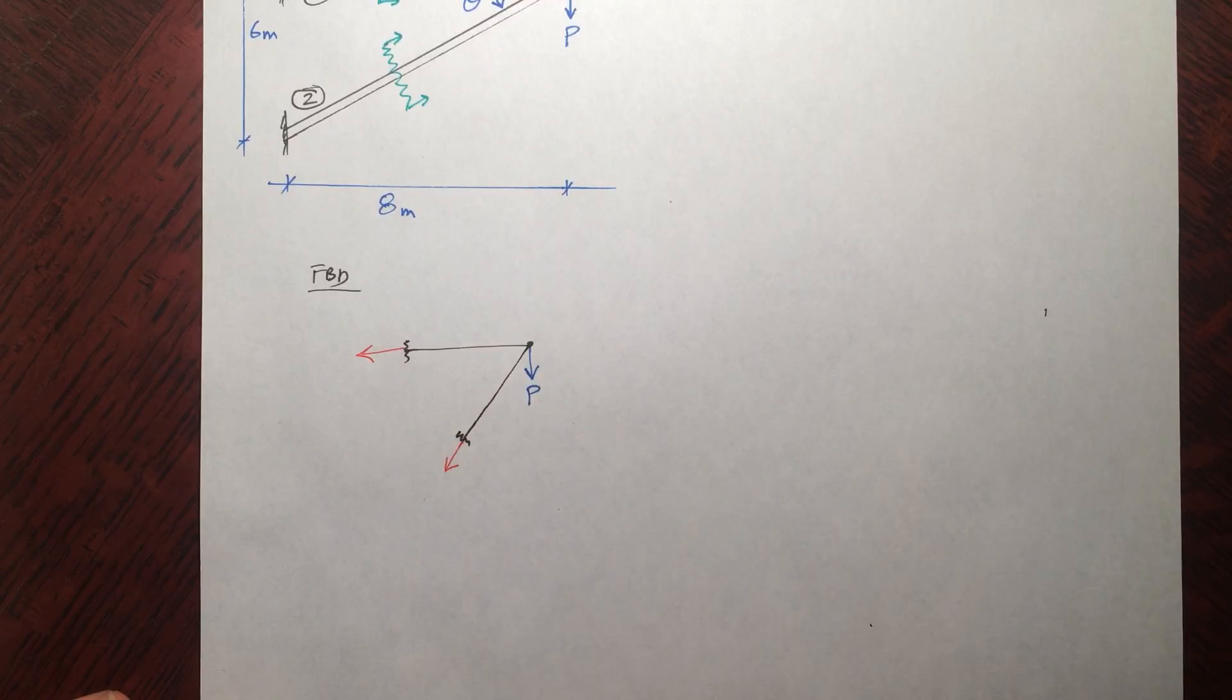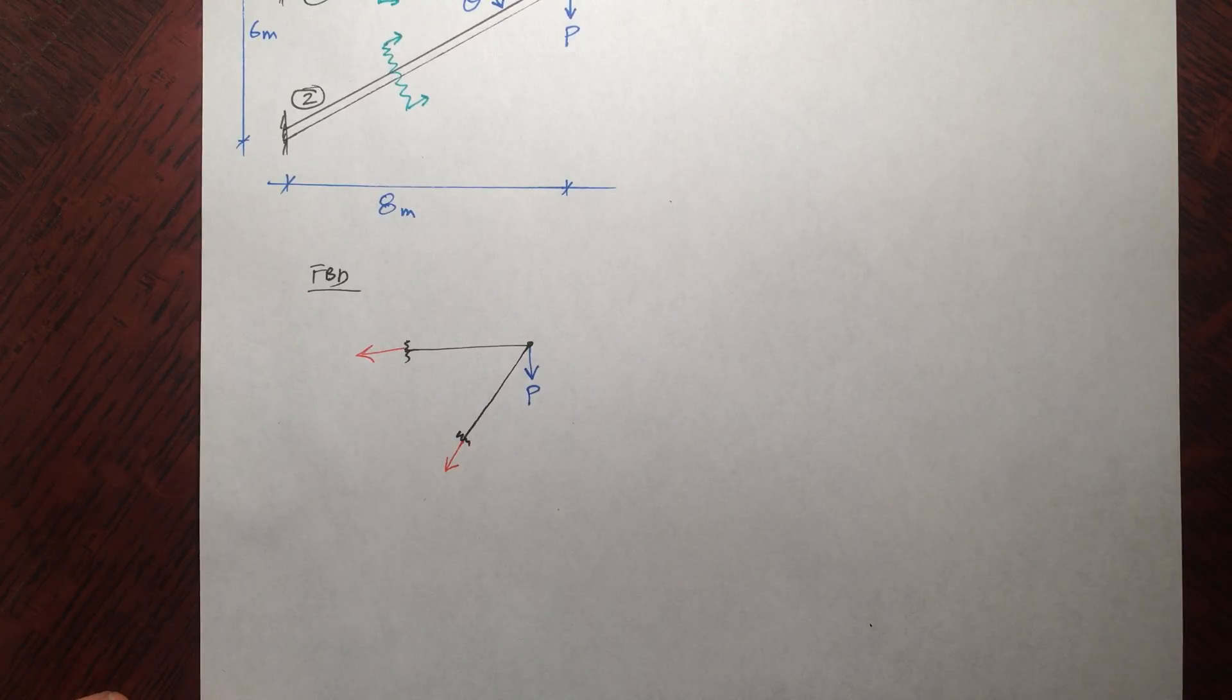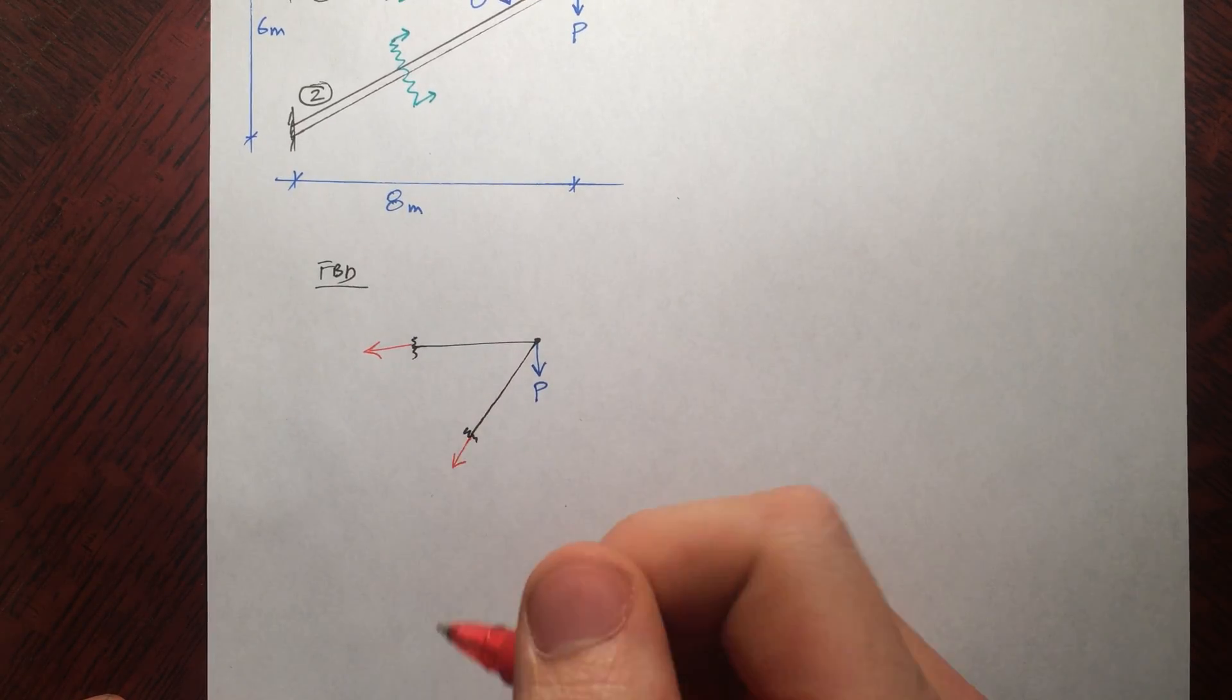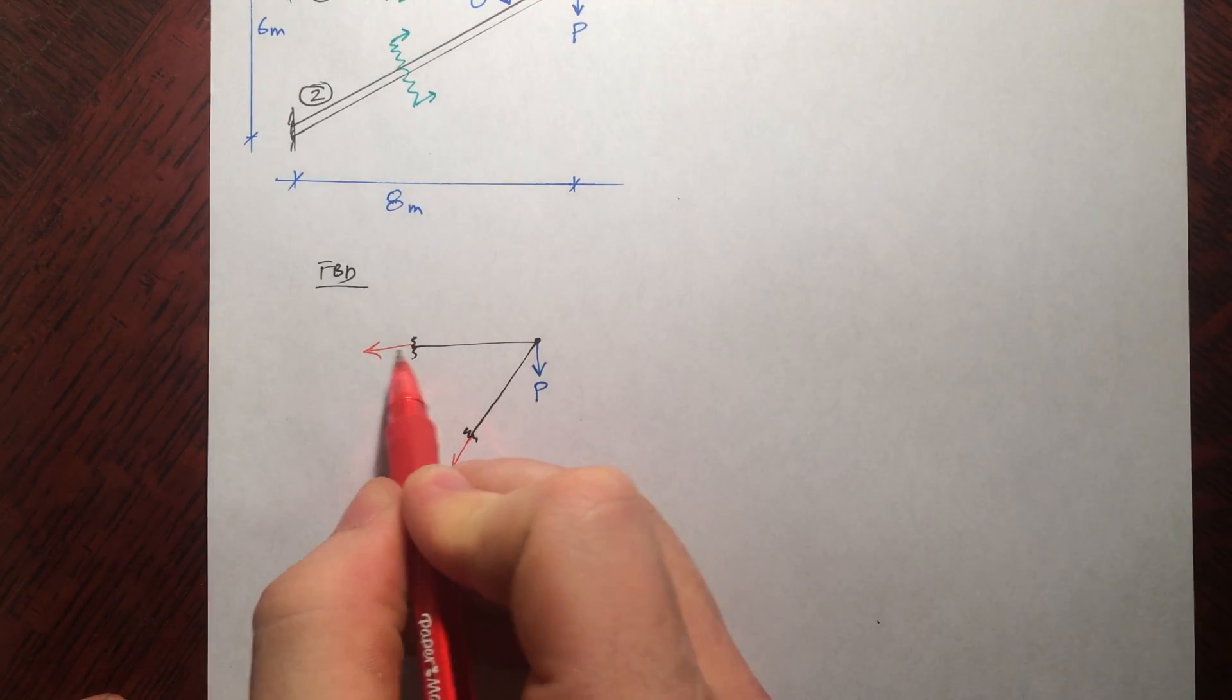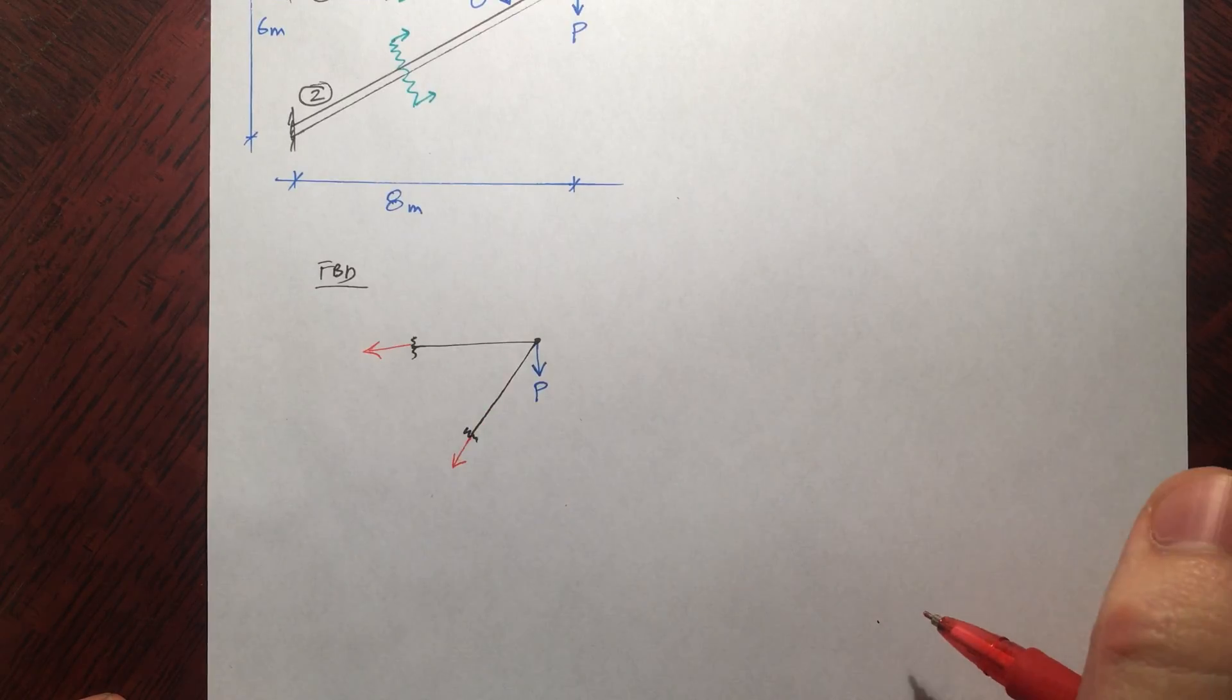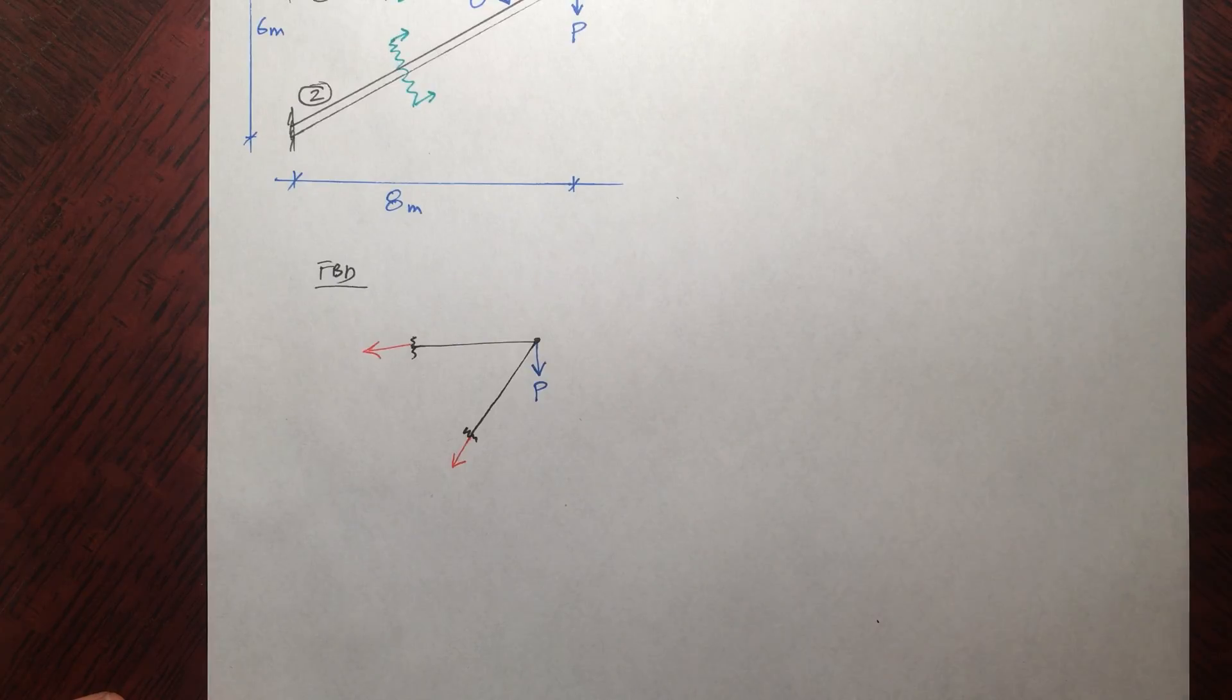But you can get some pretty complicated structures where you don't know. So I wouldn't recommend putting these arrows in by thinking about it, unless it's so straightforward that you can just, oh, it's going to be that way, so I'll put it in that way. You want to just put them in as the things were in tension. That's what pointing away means. And then if it is in compression, your answer will just turn out to be negative. So you won't actually get anything wrong.